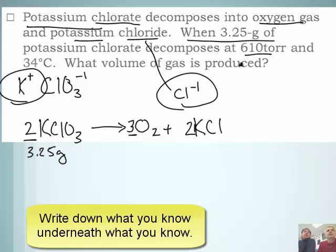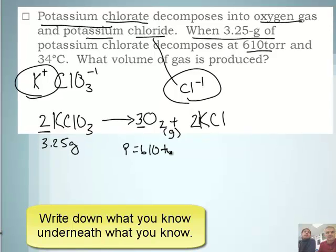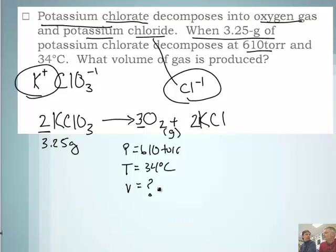It decomposes at 610 torr. We're measuring the gas - the gas here is oxygen. So this pressure is 610 torr. We have a temperature: 34 degrees Celsius. And it's asking what is the volume of the oxygen gas. We have almost enough stuff to use PV equals nRT. We need n. The one thing we're missing is n, but we can get that from stoichiometry.